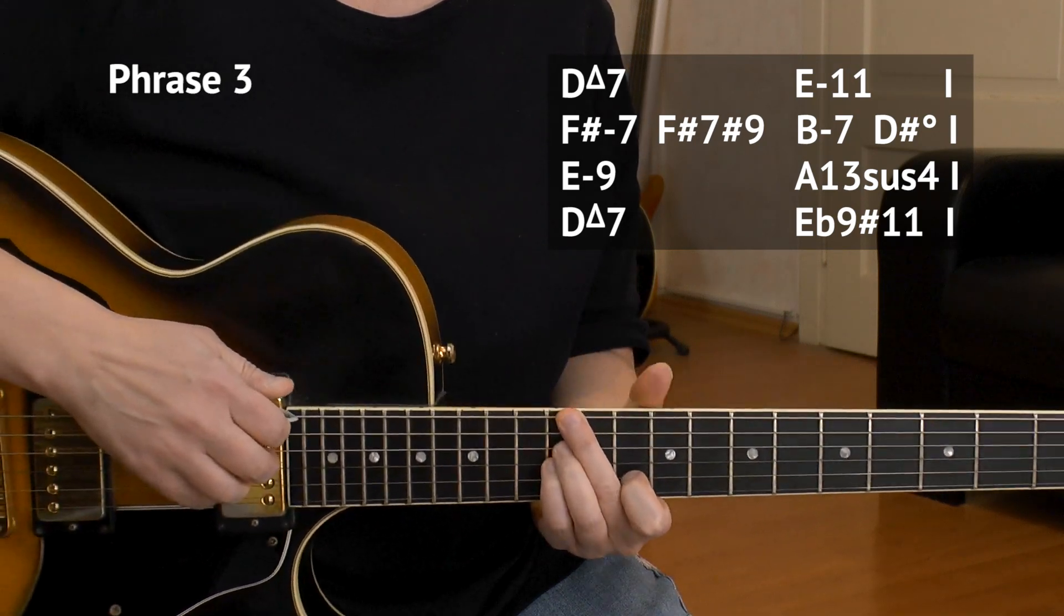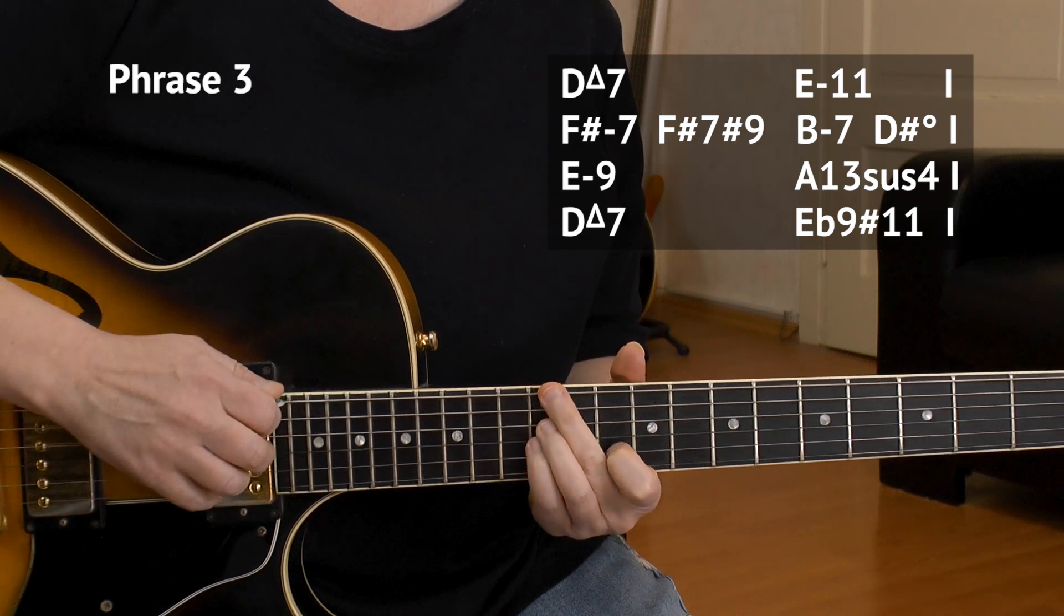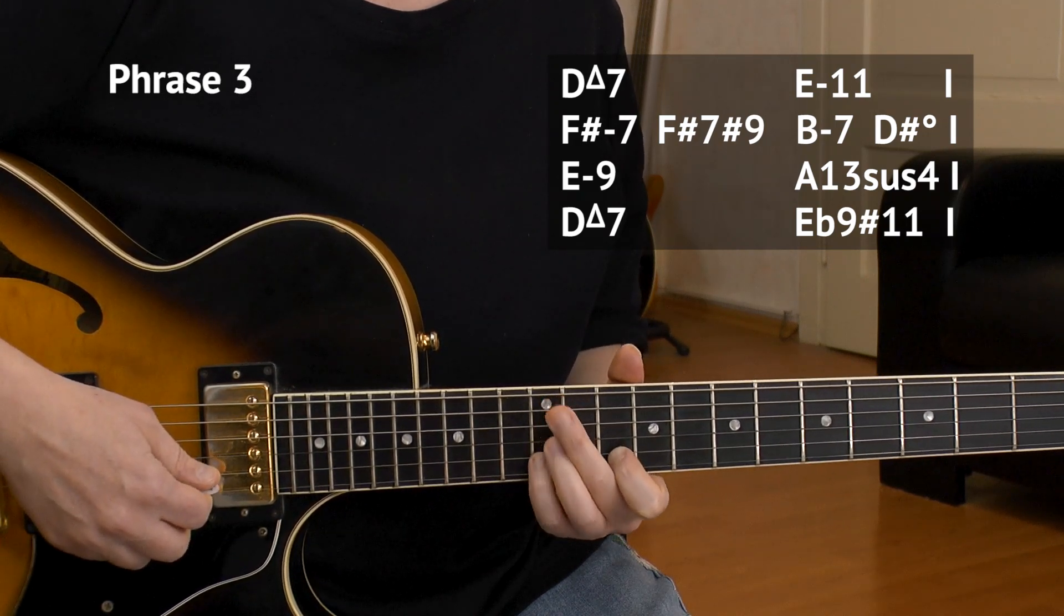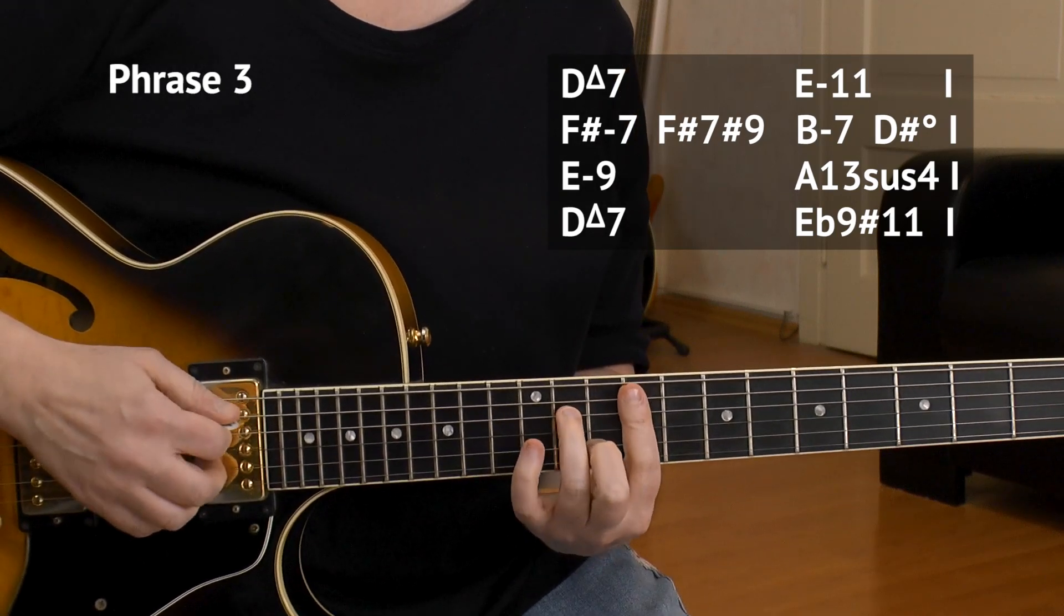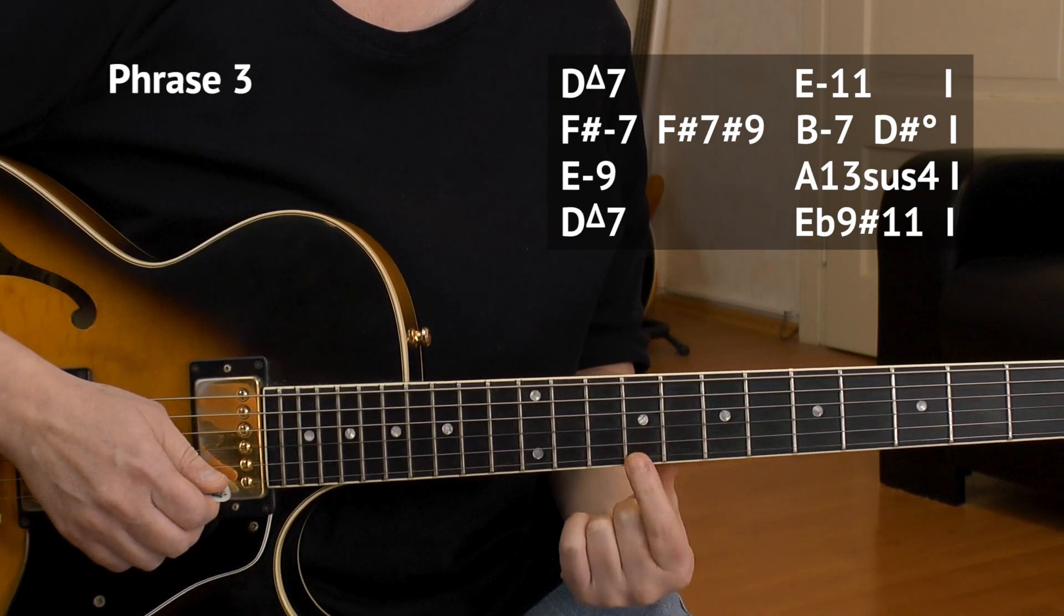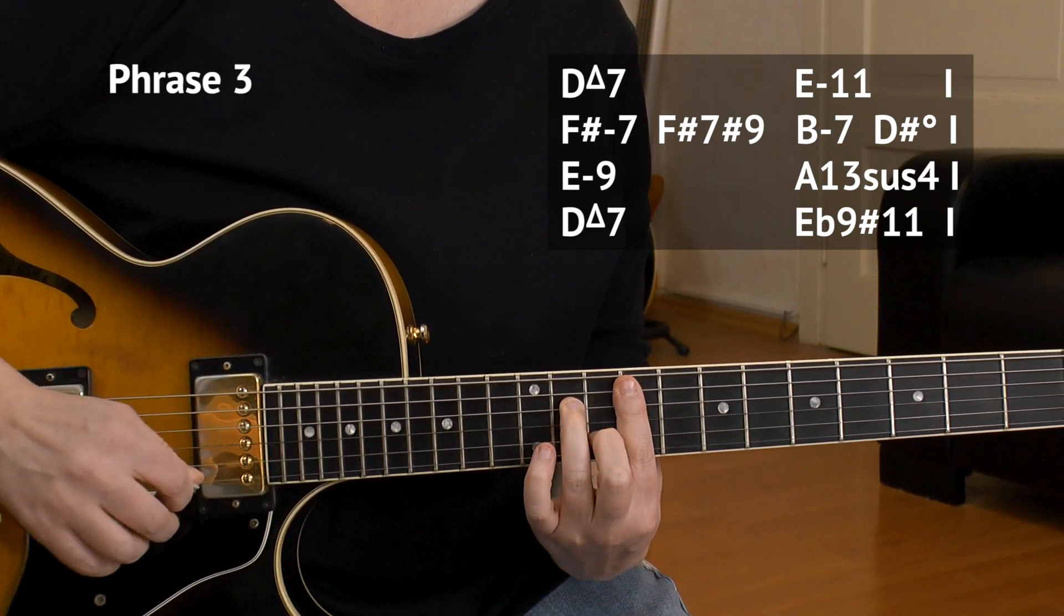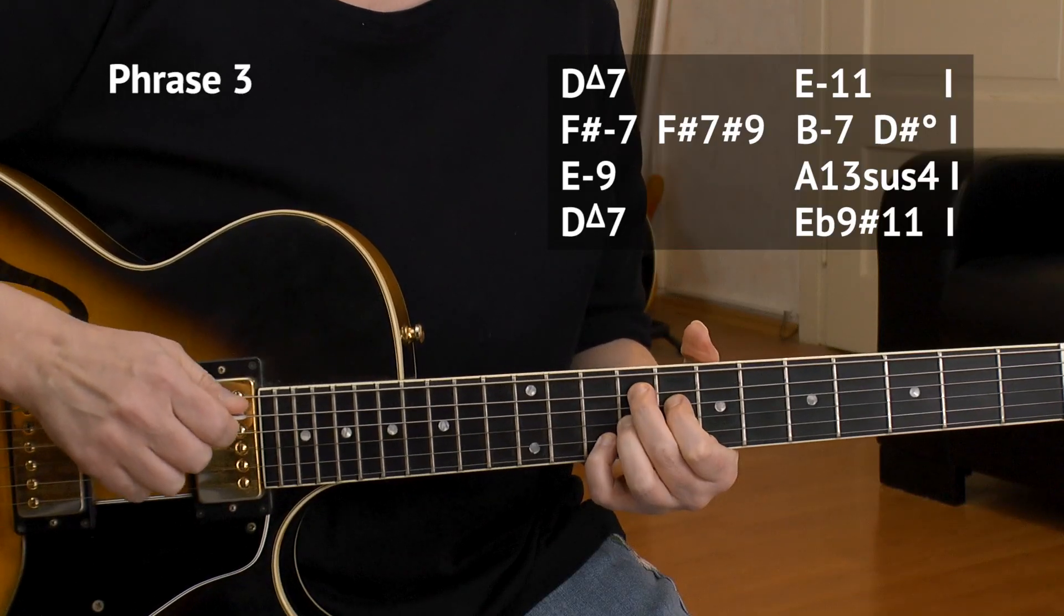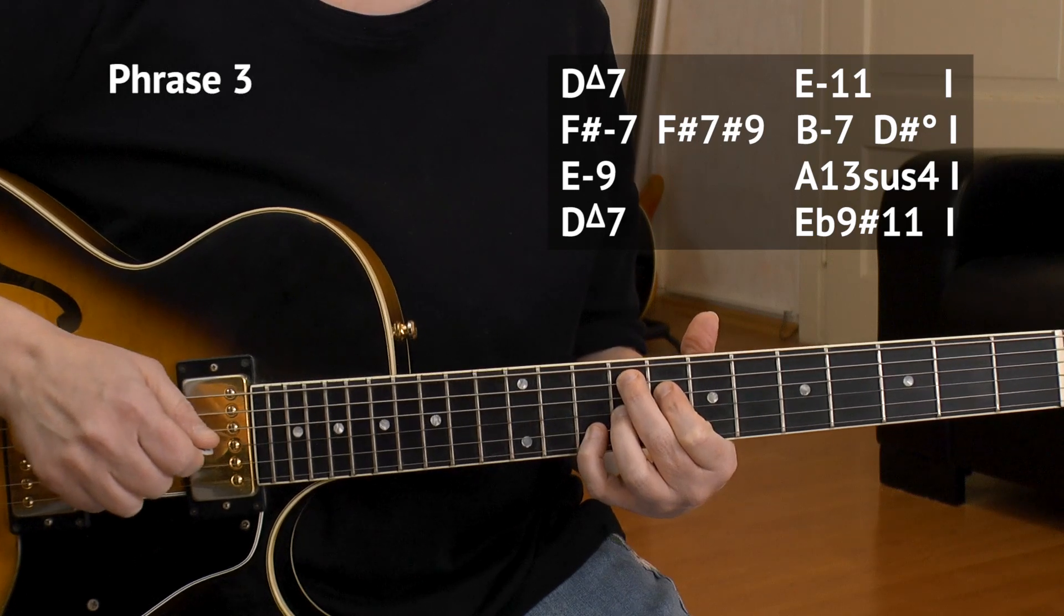Then the E minor 11. That's 12 on the E, 12, 12, 10. E minor 11, 12th of the B string. F sharp minor 7. Here's the F sharp on the ninth. 11, 9, 10, 9, all the way through, because here's the melody. Then the B string, here's the melody. And now we change over to an F altered, F sharp to be exact, F sharp 7 sharp 9. 9, 8, 9, 10.